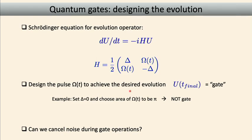This leads to the idea of dynamically corrected gates. A gate is created by evolving under some Hamiltonian and looking at the evolution operator at some final time. We use a generic single qubit Hamiltonian with a driving field on the x-axis and some constant energy splitting delta or detuning parameter. We want to choose this driving field omega of t in such a way that we realize some final form of the unitary.